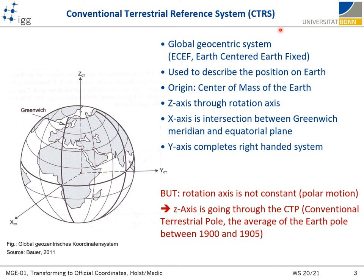The conventional terrestrial reference system is defined by a set of conventions, algorithms, and constants which provide the origin, scale, and orientation of that system and its evolution in time. It is a global geocentric coordinate system used to describe the position on Earth, also known as an Earth-centered, Earth-fixed coordinate system, where Earth-fixed means it is rotating in space together with our planet, unlike, for example, celestial reference systems.